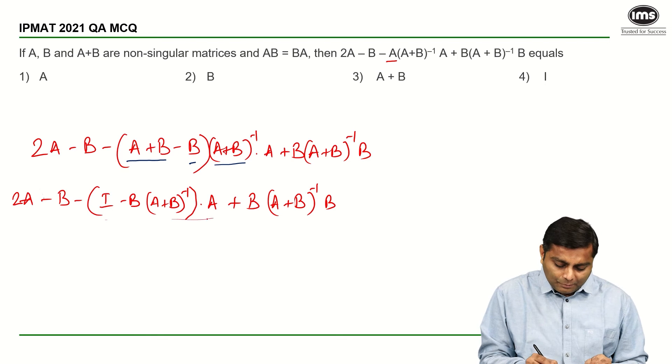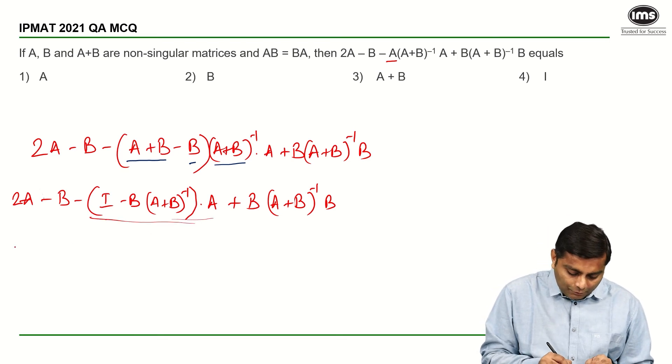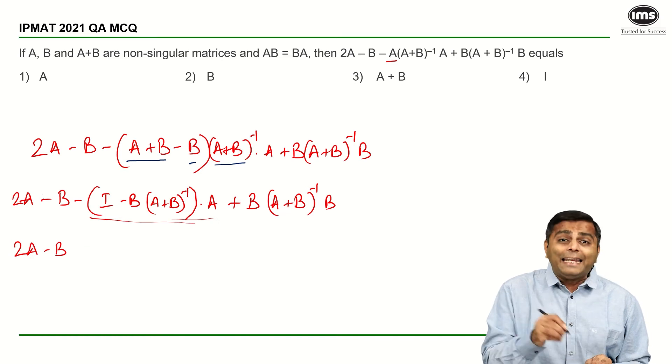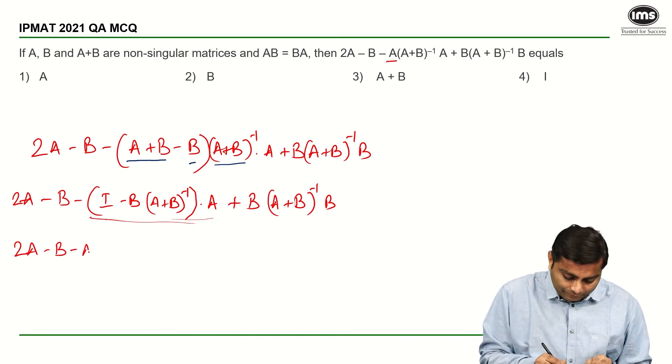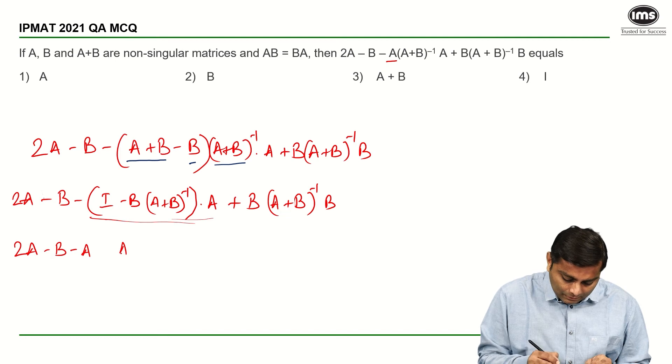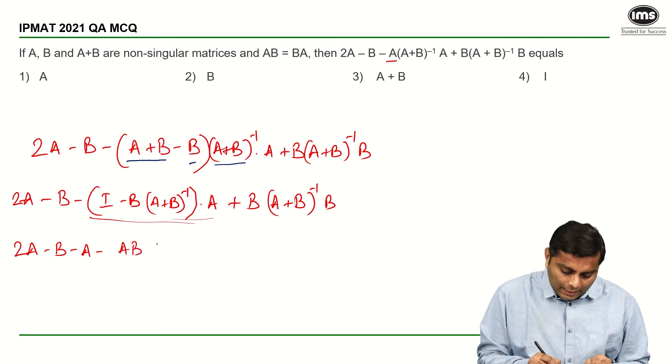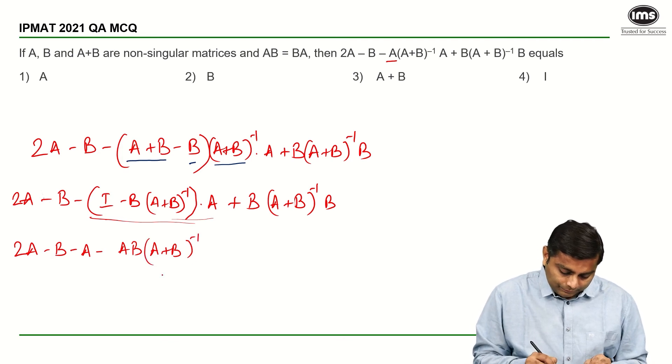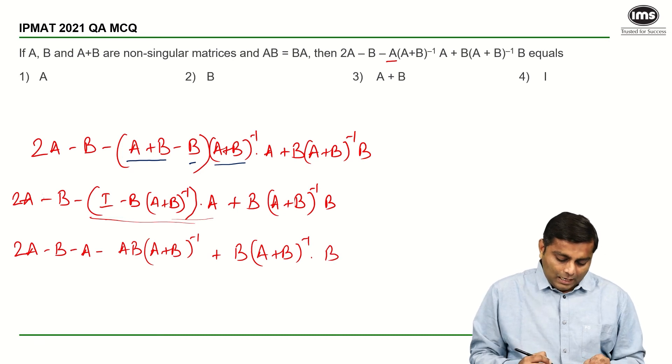Now, if I open this bracket, I am going to get what? I am going to get 2A minus B minus I into A which is A and minus B into A plus B inverse, plus B into A plus B inverse times B.